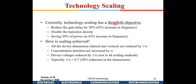Current technology scaling has a threefold objective. First, reduce gate delay by 30% — as device capacitance decreases, delays are reduced, while current levels must be maintained by reducing VDD and threshold voltage proportionately. Second, double transistor density, approximately 2x. Third, reduce power by 50%, because dynamic power is lower due to reduced capacitances.